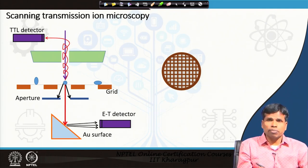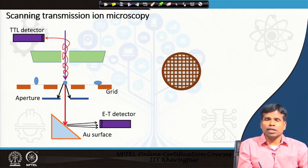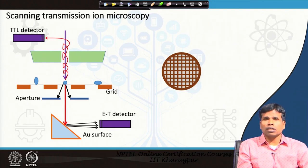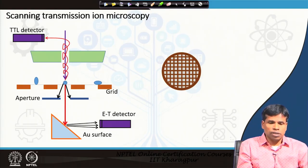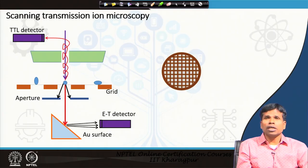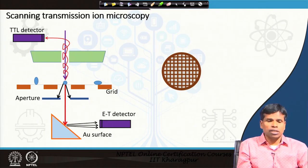On the other hand, ions have a much larger size and heavier mass, so we cannot easily make ions pass through the specimen unless it is very thin. This is the disadvantage of scanning transmission ion microscopy — making the sample thin enough is not easy, and therefore most ions cannot pass through. In practice, scanning transmission ion microscopy is not very popular or widely used in the scientific community. Scanning transmission electron microscopy attached with TEM is extensively used for microanalysis, because in TEM the incident energy is much higher, around 200–300 kV, allowing electrons to easily penetrate through the sample.